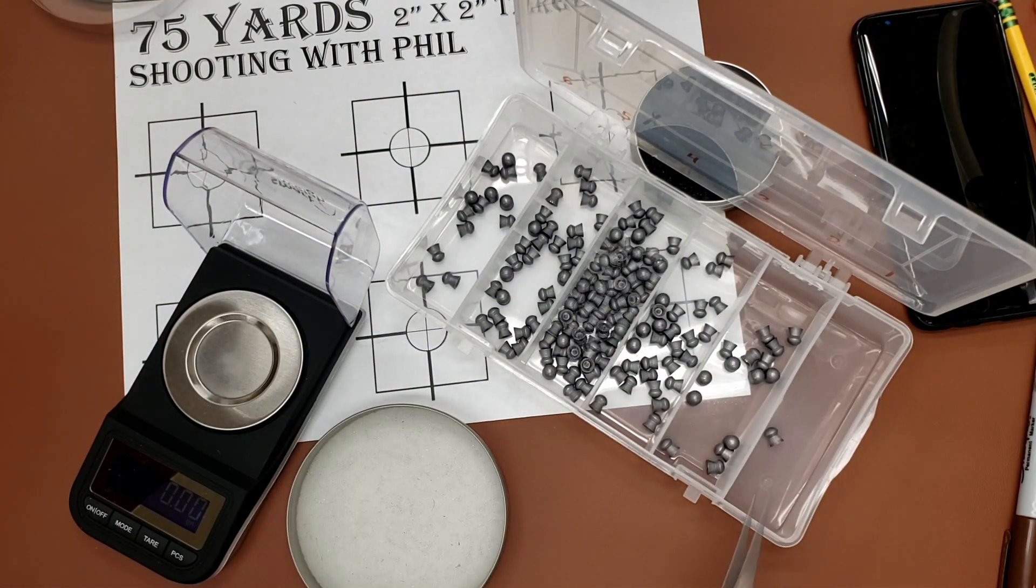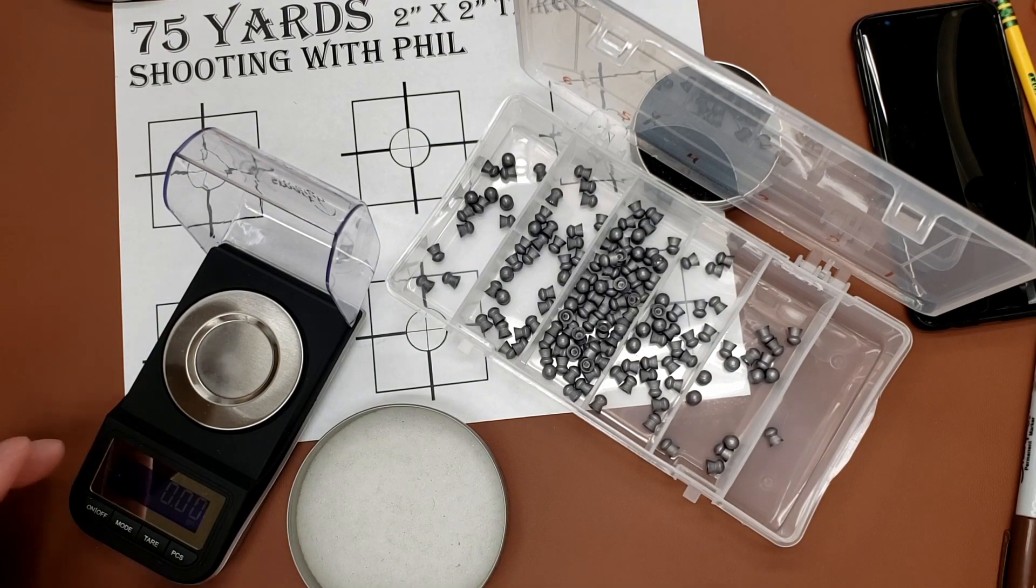Okay, there you have it. Lightest at 0.1, heaviest at 0.6. So that's a half a grain spread. Wee, fun. Let's count them up.